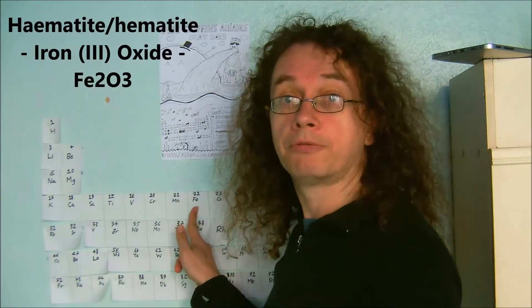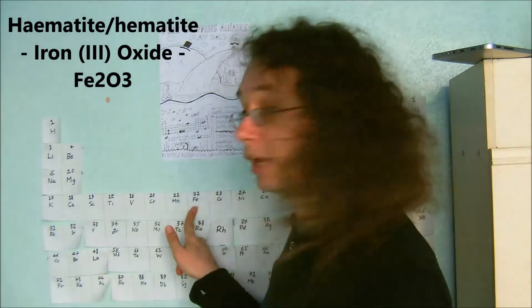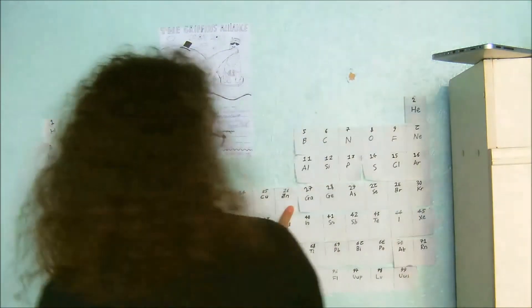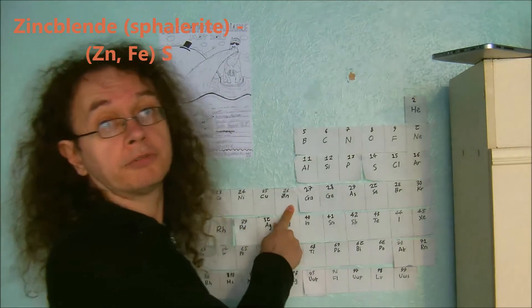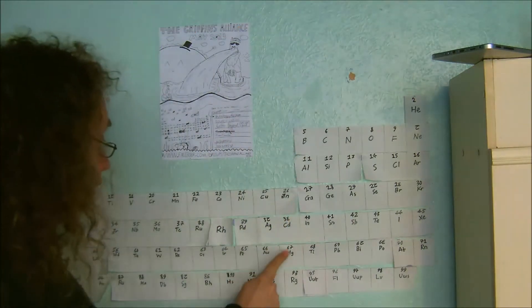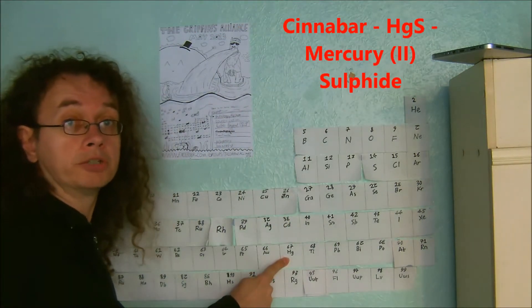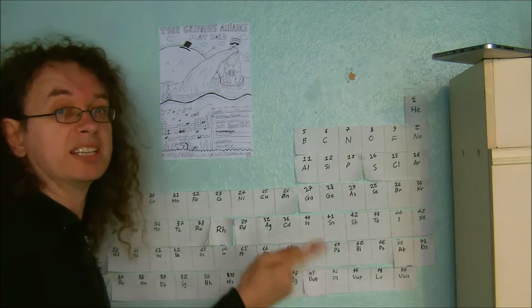For example, hematite iron ore, two atoms of iron per three atoms of oxygen. Another one is zinc blend, zinc sulfide, very common. Another one again is cinnabar, which is mercury sulfide.